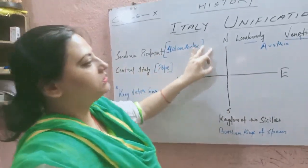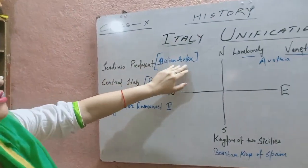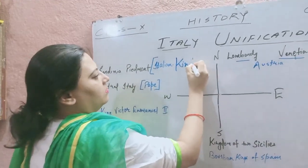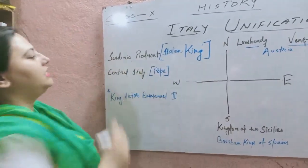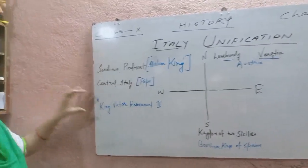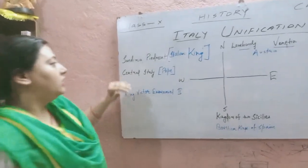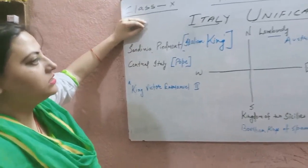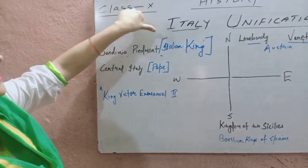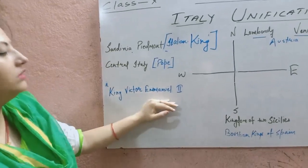Only one region — Sardinia-Piedmont — was under the control of an Italian ruler. Only that single region, Sardinia-Piedmont, was under the control of the Italian king, who was Victor Emmanuel II. This is very important: if asked which region was under the control of an Italian king only, the answer is Sardinia-Piedmont, ruled by Victor Emmanuel II.